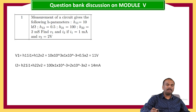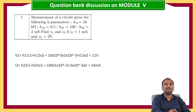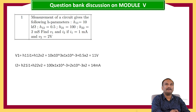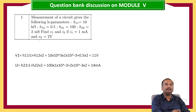The first problem: the measurement of a circuit gives the following H parameters. H11 equals 10 kilo ohms, H12 equals 0.5, H21 equals 100, H22 equals 2 milli Siemens. Find V1 and I2 if I1 equals 1 milli ampere and V2 equals 2 volts.